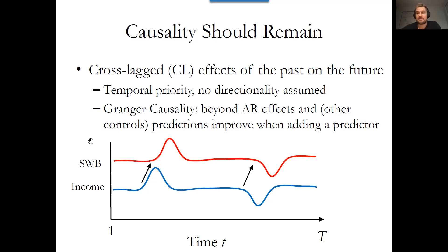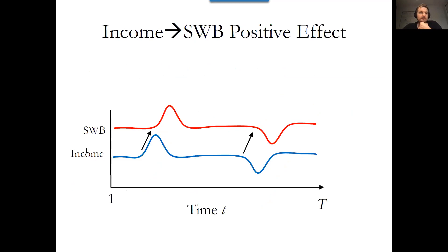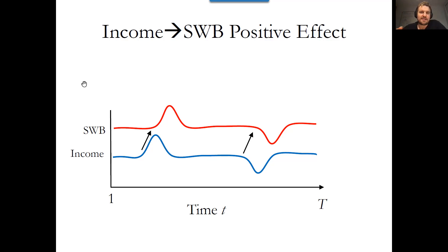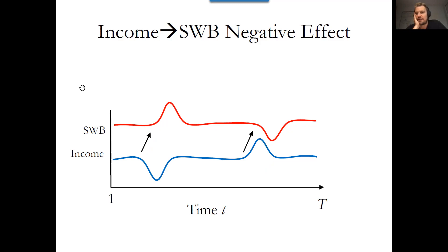Because we're not assuming directionality, effects between variables can be positive or negative. If an effect is positive, variables track each other with a delay — one goes up, the other goes up in the future, essentially shifting one variable into the future. If the effect is negative, for example if income goes down and there's a negative effect, then subjective well-being would go up, and vice versa.